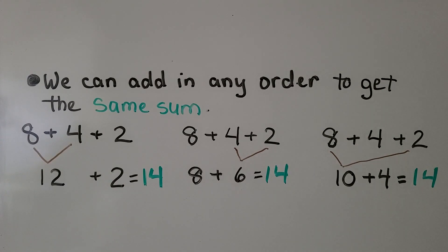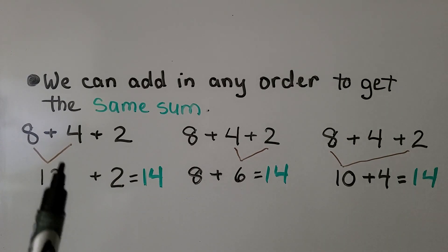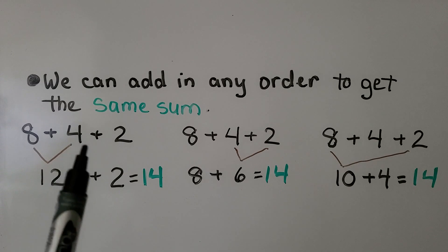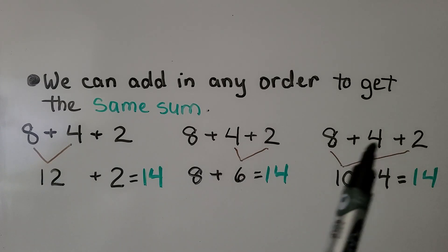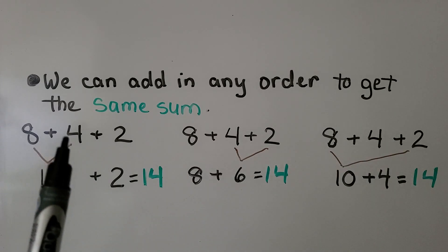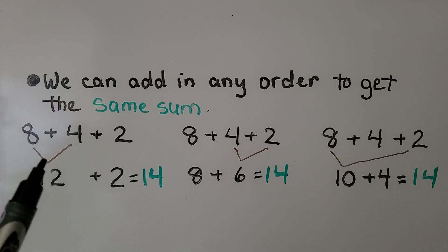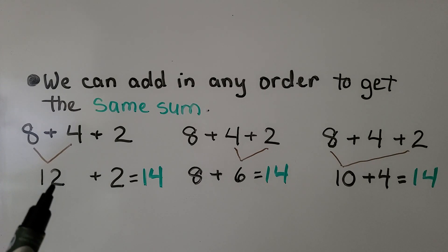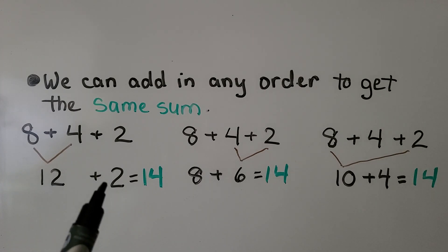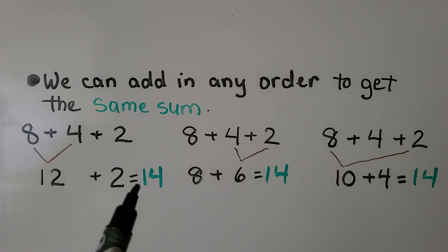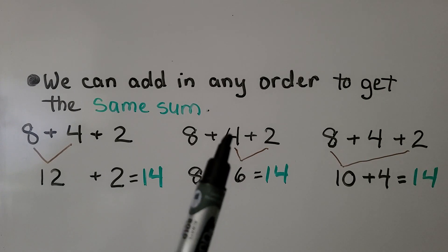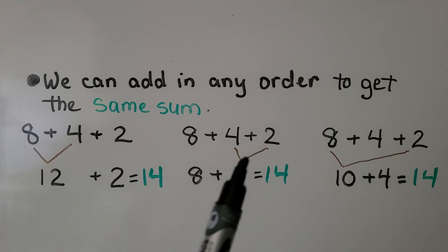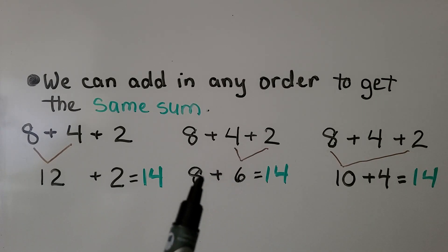We can add in any order to get the same sum. We have eight plus four plus two. We can add the eight plus four first to equal 12, then add the two to equal 14. We could also add the four and the two first to equal six, then add the eight — that's equal to 14.